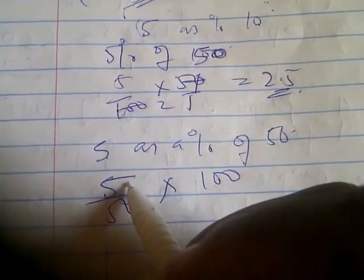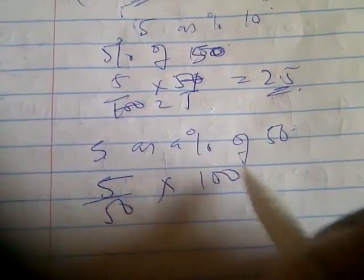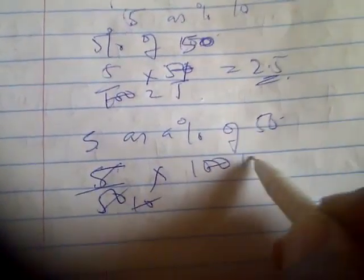So canceling that out is going to be 10 percent. So really, 5 is 10 percent of 50.